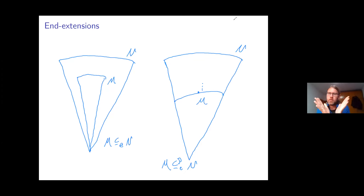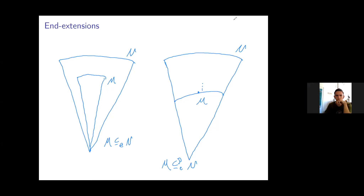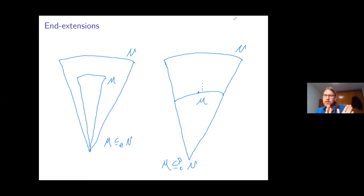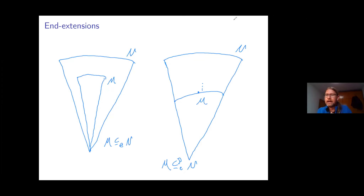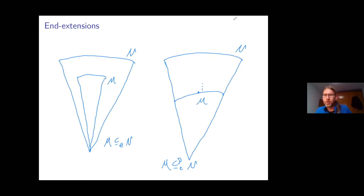What you want is some kind of stratification of your universe, which you have in KPP because you have all the ranks, and in MOST because you have these H-kappas. You can certainly do it in KPP and in MOST. Whether KP alone is enough is less clear — that's an interesting question. The picture changes a lot if things go non-standard at the blunt point.